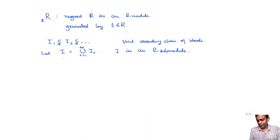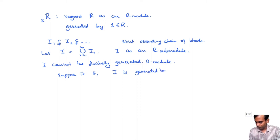Then I claim that I cannot be finitely generated. Why is that? Suppose it is, so generated as an R-module. Suppose it is, then say I is generated by, let us say some elements M1, M2, M_n.